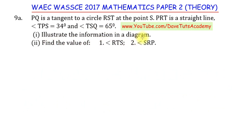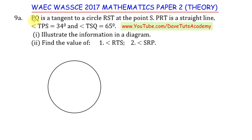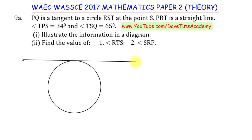We are going to illustrate this information in a diagram. First, we identify the tangent PQ. Notice that PQ is a tangent to circle RST at point S, and PRT is a straight line. So P is a focal point of interest — P is a point on the tangent, and it also defines a straight line passing through the circle. We draw line PQ as a tangent, touching the circle at only a single point on the circumference.